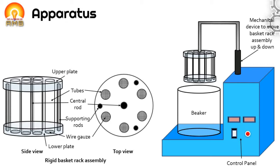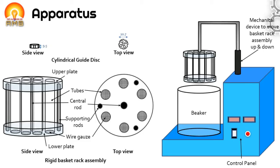The next part is a beaker. A beaker having a capacity of 1000 ml is kept below the basket rack assembly. Distilled water or liquid medium as specified in the monograph is kept in the beaker. Another part is the cylindrical guide disc. Six discs are present, made of transparent plastic. Each disc has a thickness of 9.5 mm and a diameter of 20.7 mm, with five holes each 2 mm in diameter — one in the center and four spaced equally on a circle of radius 6 mm from the center. Four equally spaced grooves are cut in the lateral surface of the disc, and each disc has a relative density of about 1.18 to 1.20.